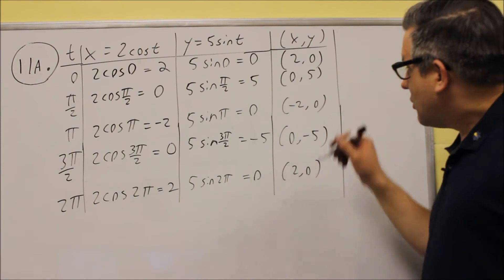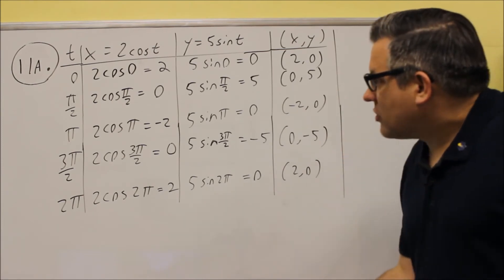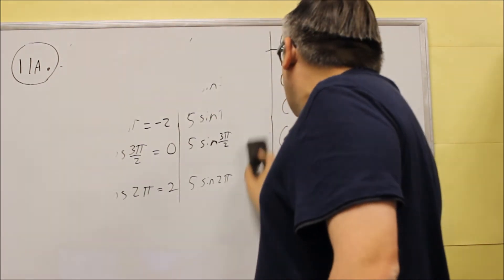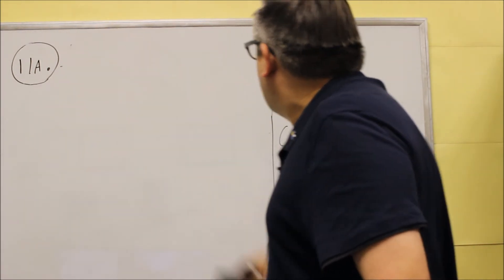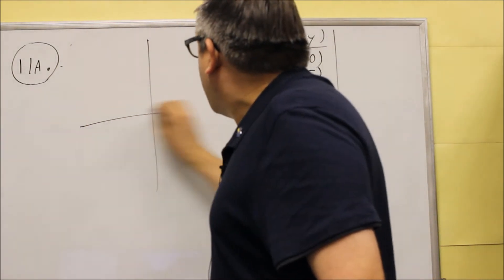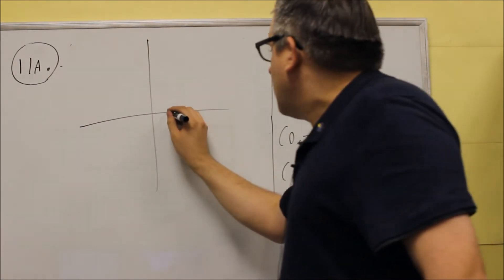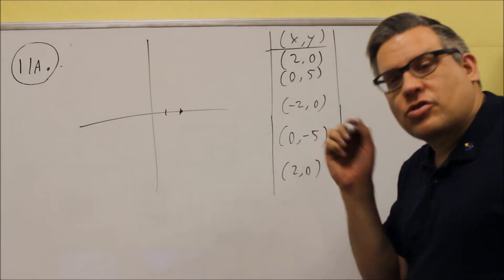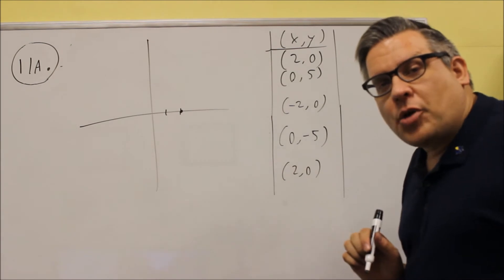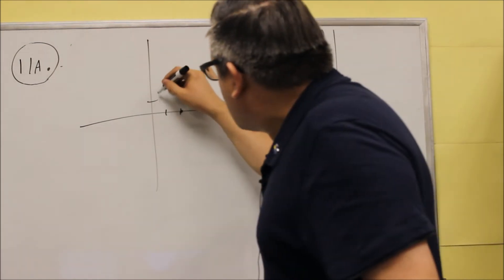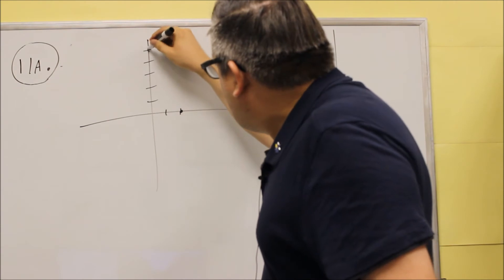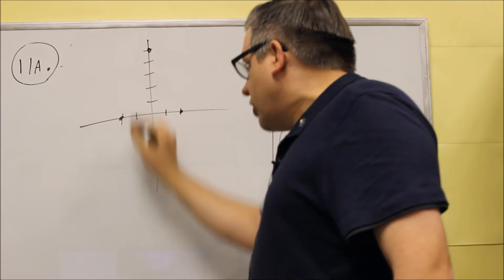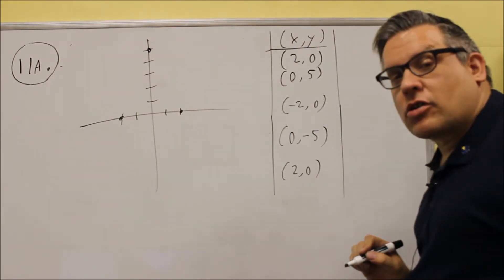What you want to do next is plot these points, and so we'll do that, make some space here, and I'll leave these values. So we first start plotting it. We start with two comma zero, and you want to keep attention to which direction the point is moving, because we have to put our directional arrows when we do our parametric equation graphs. Zero five is the next one, so it goes to here, and then we have negative two zero, so the point is going in this direction in the counterclockwise motion.